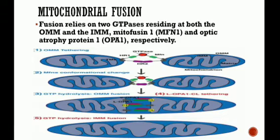Mitochondrial fusion helps mitigate stress by mixing the contents of partially damaged mitochondria as a form of complementation. Fusion relies on two GTPases residing at the outer mitochondrial membrane and the inner mitochondrial membrane: Mitofusin, present on the outer mitochondrial membrane, and Optic Atrophy Protein 1 (OPA1), present on the inner mitochondrial membrane.